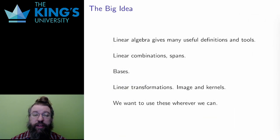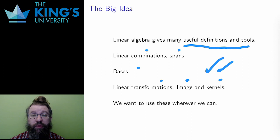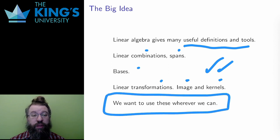So let me recap. Linear algebra gives many useful definitions and tools. Linear combinations, spans, bases, linear transformations, image, kernels, etc. I want to use these terms wherever I can, wherever they are useful. Since I put in the effort to learn this language, I want to use it as widely as possible. Therefore, I define an abstract vector space as an abstract structure where these terms still work.